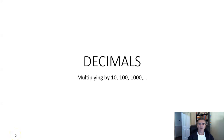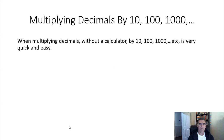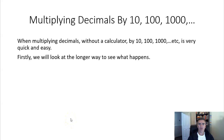In this video, we're going to have a look at how we multiply decimals by 10, 100, 1000, etc. So hopefully by the end of this, you'll be able to do this very quickly. When we multiply decimals without a calculator, we're going to have a look at a quick and easy way. But what I'll show you first is what happens when we do it the longer way.